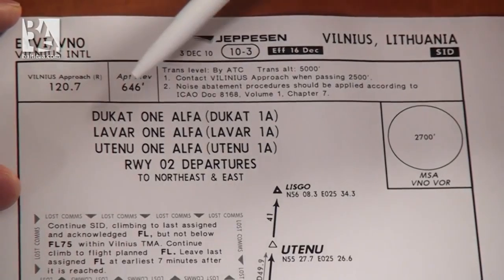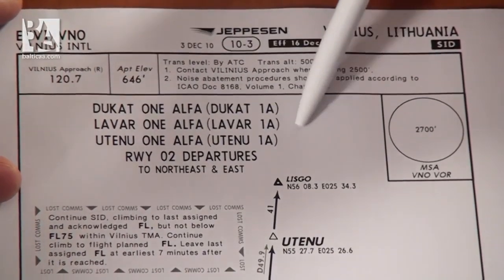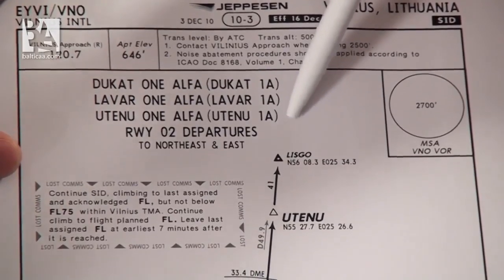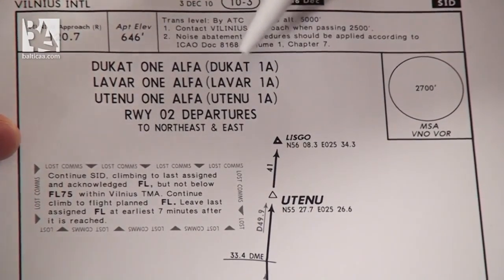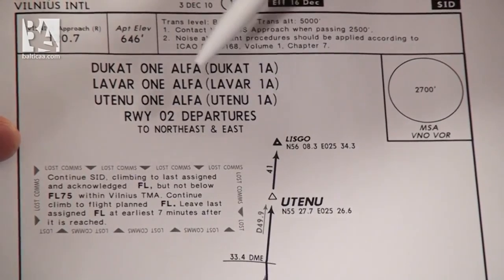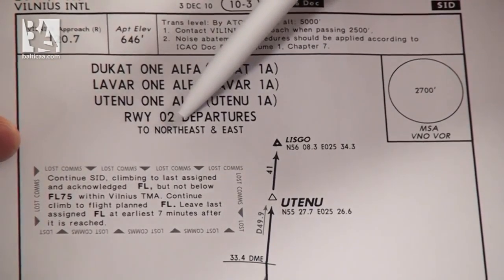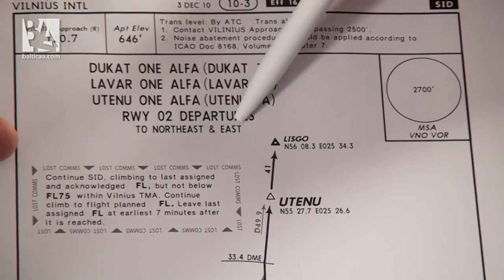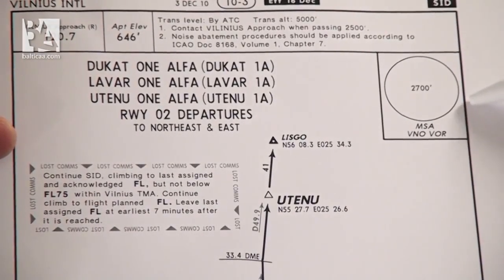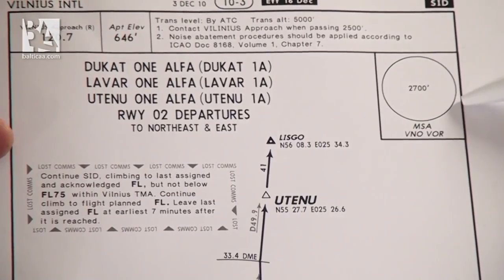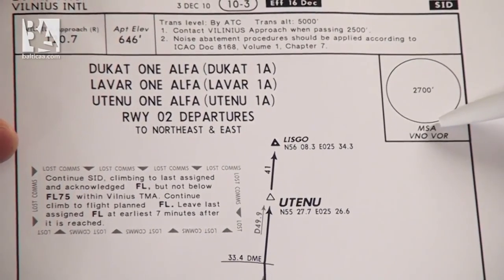Below that we have the list of departure names listed in this chart, which are Ducat 1-Alpha, Lavar 1-Alpha, and Uten 1-Alpha for runway 02 — towards the northeast and east. To the right of that we have a circle with 2,700 feet, which is our minimum safe altitude, with the center point being the VNO — Vilnius VOR.